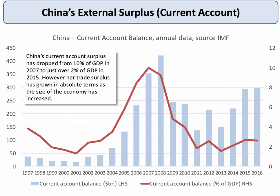But of course, given that the size of the Chinese economy has been growing so quickly — 8, 9, 10% per year — a 2% current account surplus these days is almost sufficient to generate a $300 billion current account surplus in absolute size. Whereas in 2007, a 10% current account surplus generated a surplus of $350 billion. So the enormous size of the Chinese economy means that a current account surplus of just 2% of their national income equates to a surplus of many hundreds of billions of dollars.